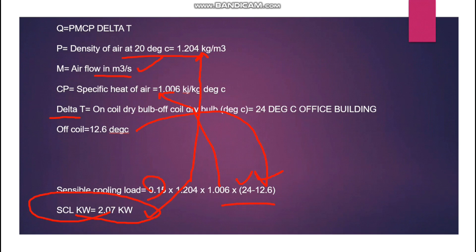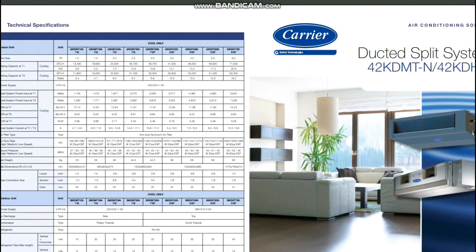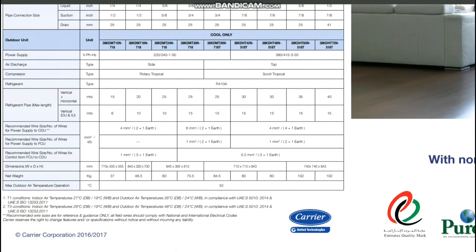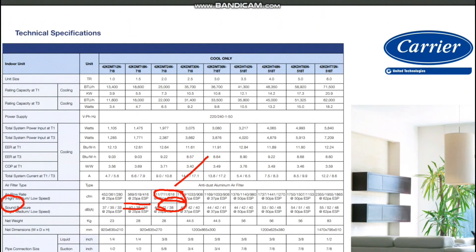One more important consideration is the T1 and T3 condition for unit selection. Opening the Carrier manufacturer unit schedule, the T1 condition uses an outdoor temperature of 35°C, while the T3 condition uses 46°C. For a 210-unit at T1, the rating capacity is 25,000 BTU/hr, but at T3 it drops to 22,000 BTU/hr. For Middle East projects, we must always select units based on the T3 condition — 46°C ambient.